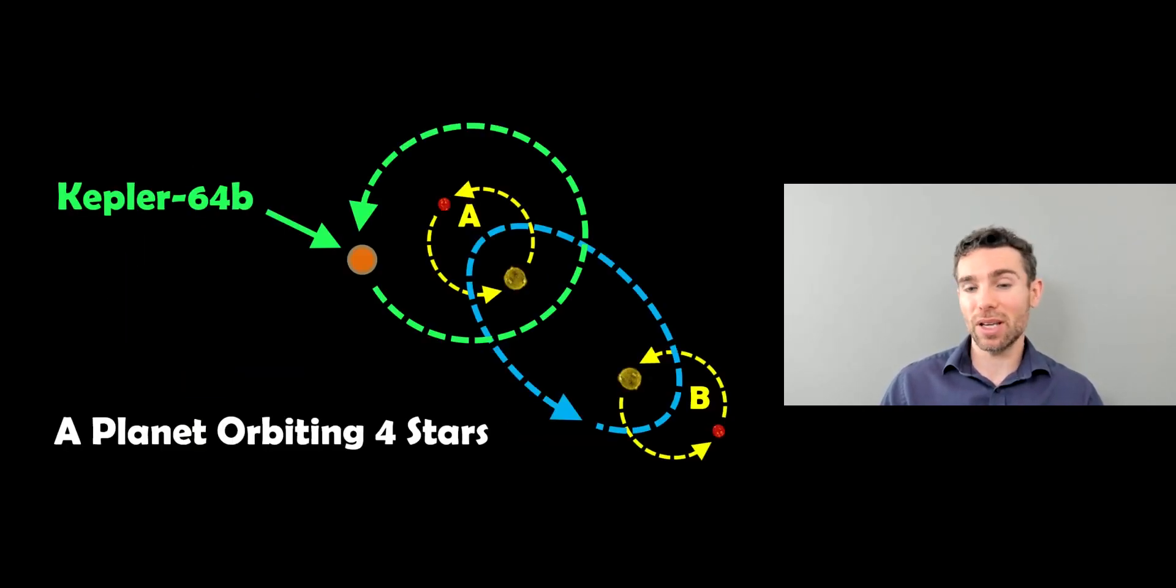So Kepler-64b is one of those planets and it orbits four stars. And it's actually a collection of two binary systems that orbit a common center of mass and the planet orbits around the outside of one of those.